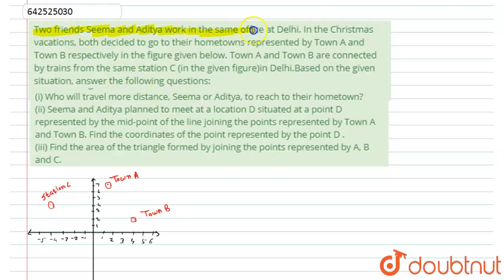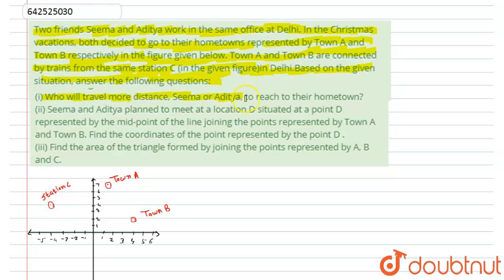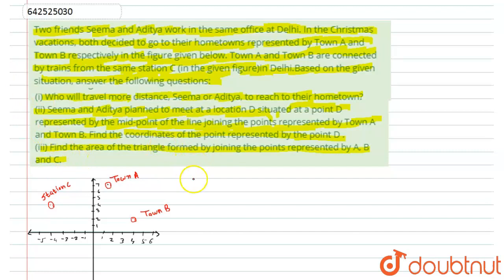Here we have two friends, Seema and Aditya, working in the same office. During Christmas vacation, they both decided to go to their hometowns, represented by Town A and Town B respectively. Town A and Town B are connected by trains from the same station in Delhi. Based on the given figure, we need to answer: who will travel more distance — Seema or Aditya? Second, find the coordinates of point D, the midpoint of the line joining Town A and Town B. Third, find the area of the triangle formed by points A, B, and C.